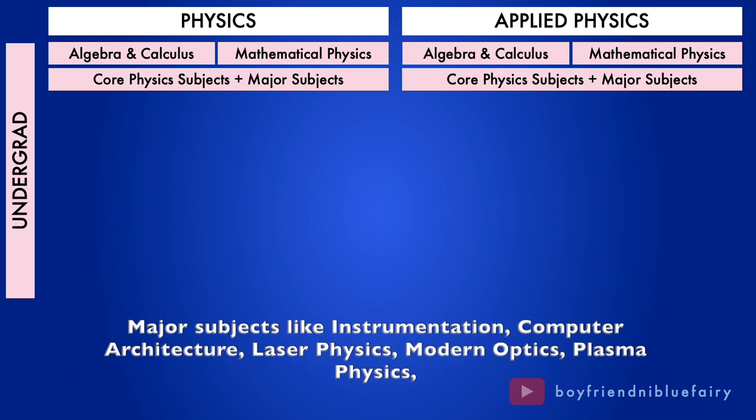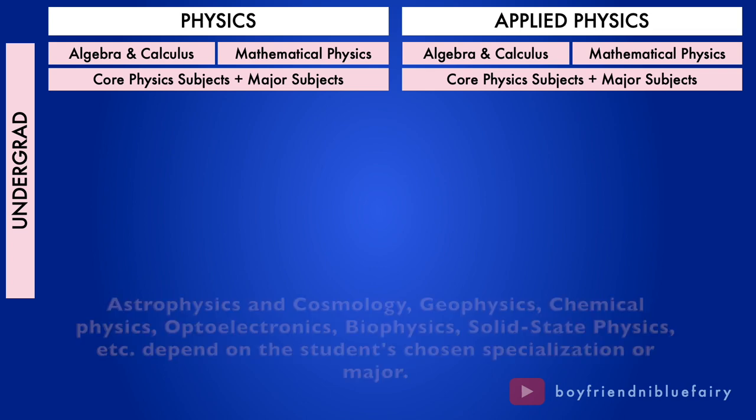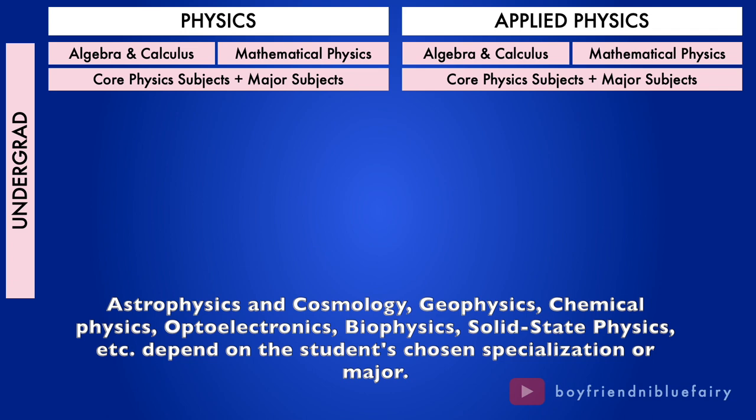Major subjects like instrumentation, computer architecture, laser physics, modern optics, plasma physics, astrophysics and cosmology, geophysics, chemical physics, optoelectronics, biophysics, solid-state physics, etc. depend on the student's chosen specialization or major.